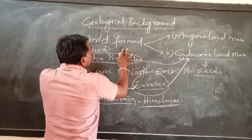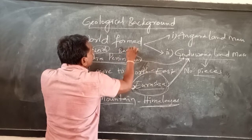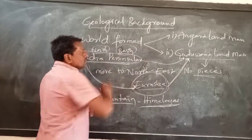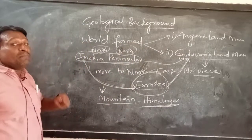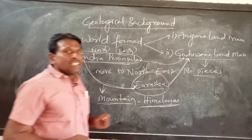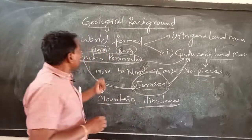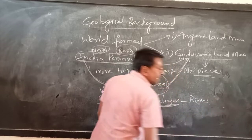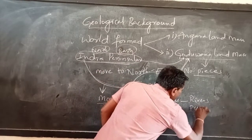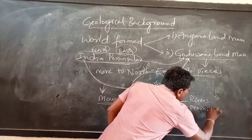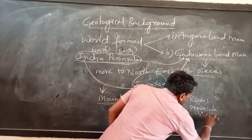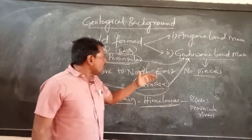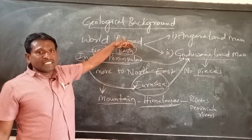When the north of the Indian peninsula broke, a basin was formed in the water. This basin was filled with sediments — soft materials — brought by the Himalayan rivers. The peninsula rivers also brought soft materials and deposited them into the basin.